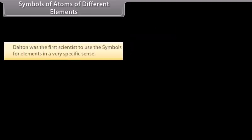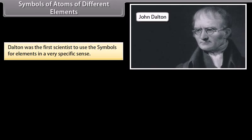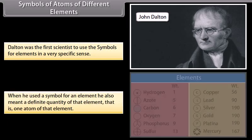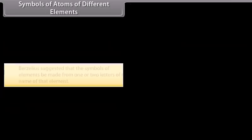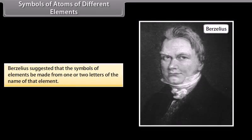Symbols of atoms of different elements. Dalton was the first scientist to use the symbols for elements in a very specific sense. When he used a symbol for an element, he also meant a definite quantity of that element, that is, one atom of that element.